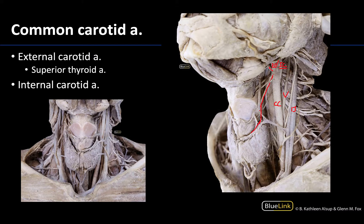The superior thyroid artery is unique among the external carotid branches in that it's the only one that will descend — the rest ascend or move transversely. It gives off a small branch called the superior laryngeal artery, which you can see right there. You can see the superior thyroid artery here coming off the external carotid and heading towards the superior portion of the thyroid gland. Much more to come on the internal carotid artery, particularly when we get to the brain, because it's going to be one of the two major suppliers of the brain.